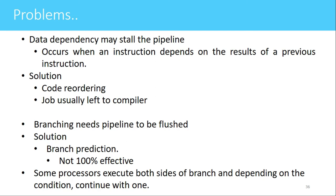The next problem is branching. When a program executes sequentially and encounters a branch instruction, the program counter may jump to a different location, requiring the pipeline to be flushed. The solution is branch prediction, which is not 100% effective. When a branch instruction occurs, the program counter starts fetching from a new address and already-fetched instructions in the pipeline must be discarded. Some processors execute both sides of the branch and continue with the correct one; in the PIC16F877 microcontroller the pipeline is simply flushed.